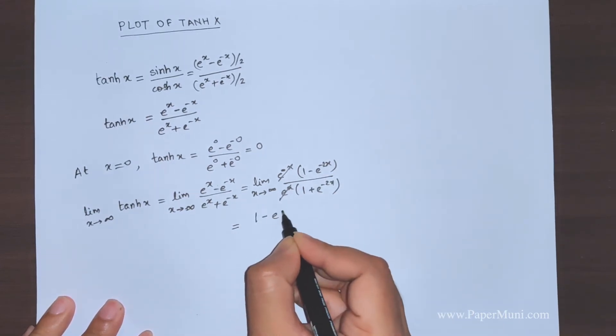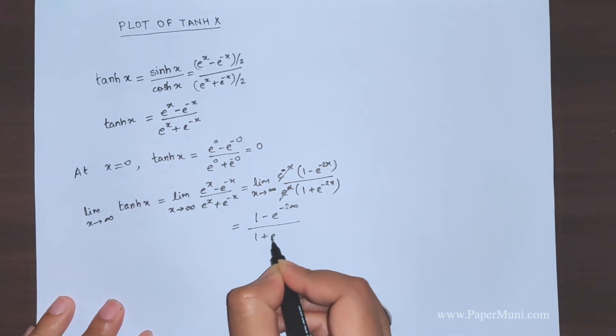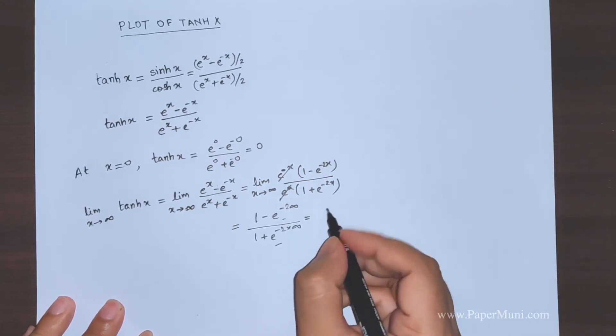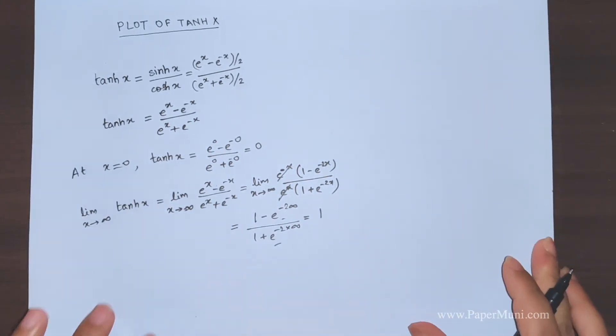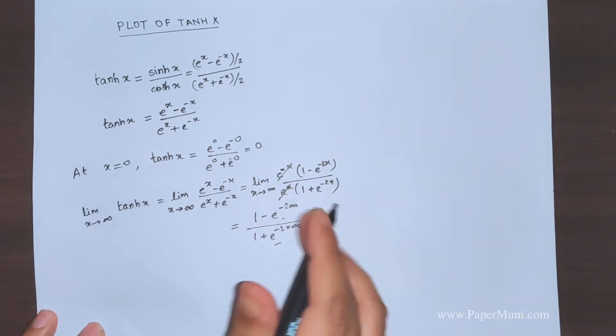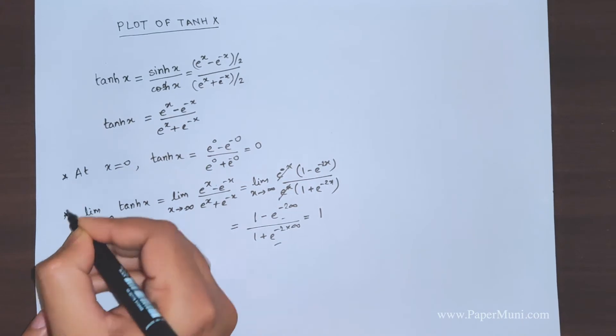As x tends to infinity, e^(-2x) goes to 0. We're left with (1 - 0)/(1 + 0) = 1. So the limit is 1.